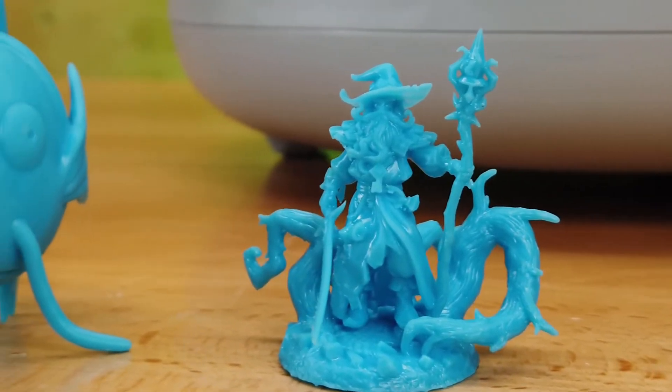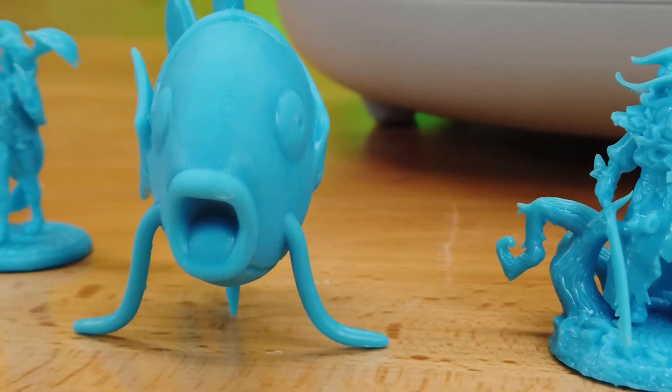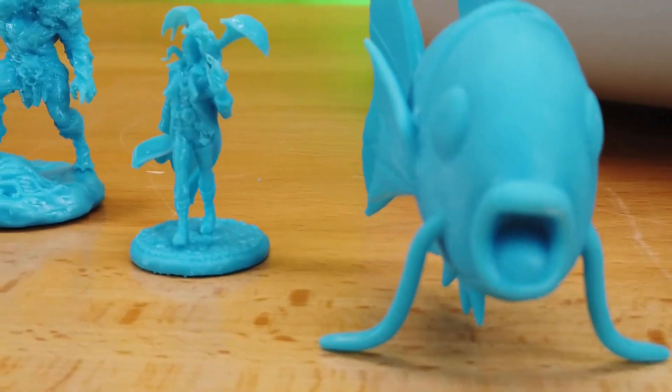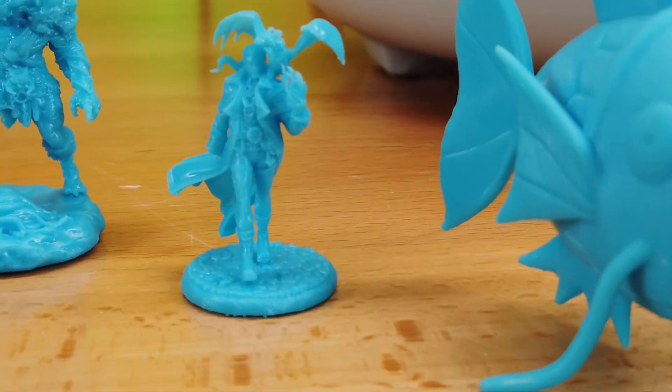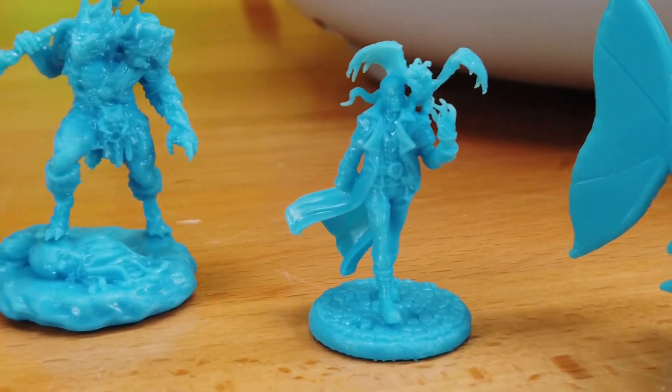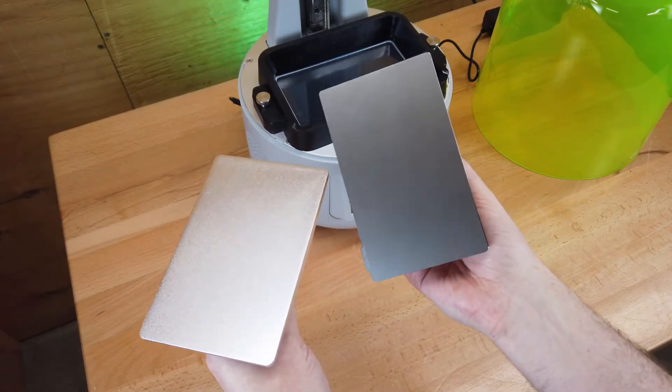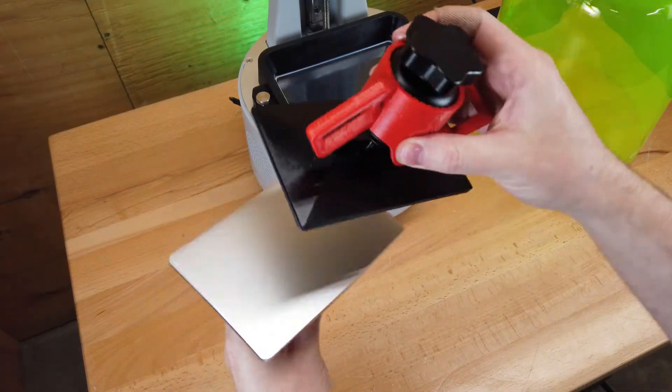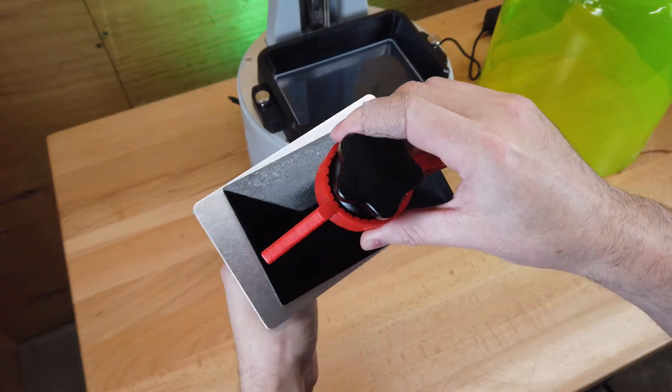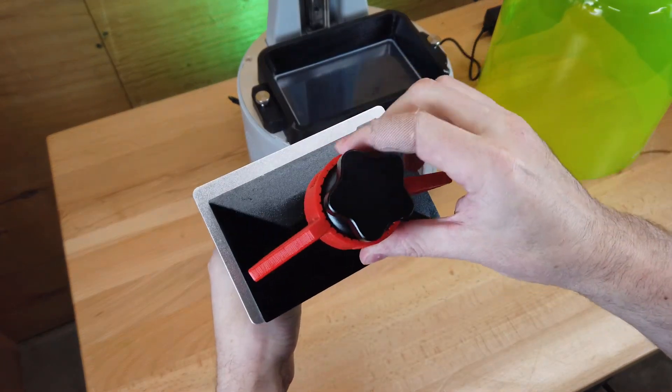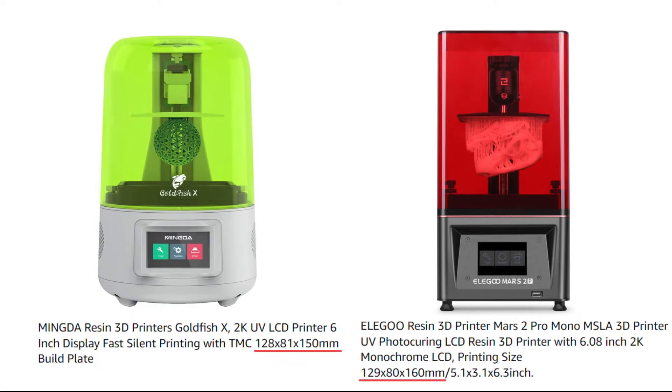Overall, the printer does a good job at fine details from what I've seen and more chunkier models. It basically has the same specs as other 2K mono printers. It does have a larger physical build plate than the Elegoo Mars 2 Pro, but they have pretty much exactly the same build area. Besides, the Mars 2 Pro has about 10 millimeters more in the Z-axis.